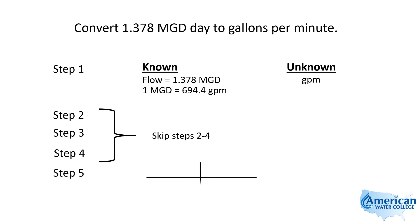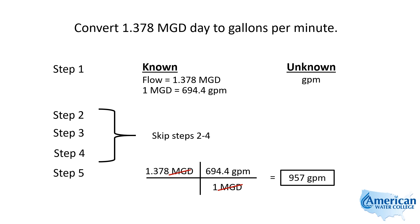Again, we're going to go to step 5. We can just enter our flow as given — 1.378 — and then load this equivalent in. Since we have MGD on top, we're going to put the 1 MGD on the bottom and the gallons per minute on top. In this case we're going to multiply across, our MGD divides out, and we multiply 1.378 times 694.4, which gives us that same answer of 957 gallons per minute.